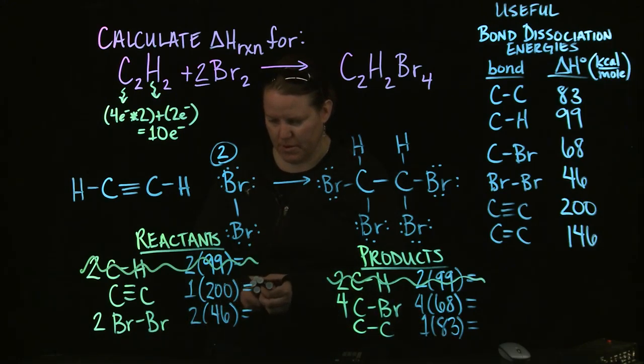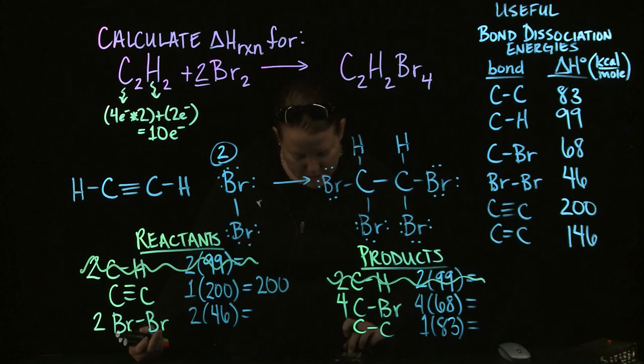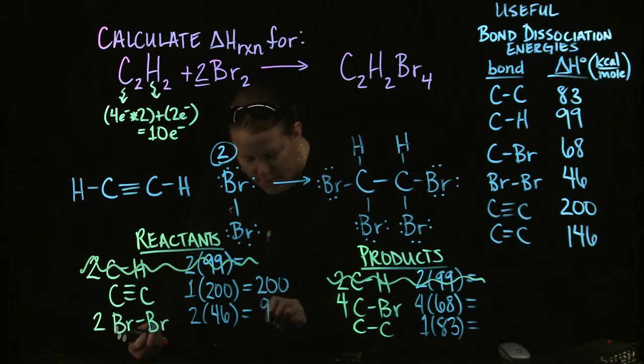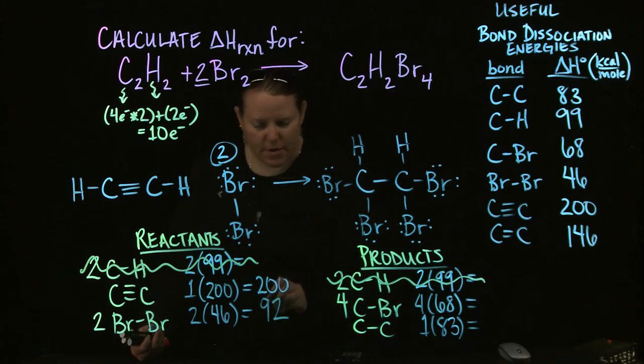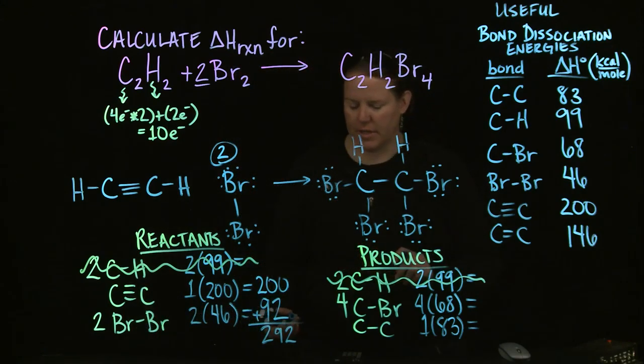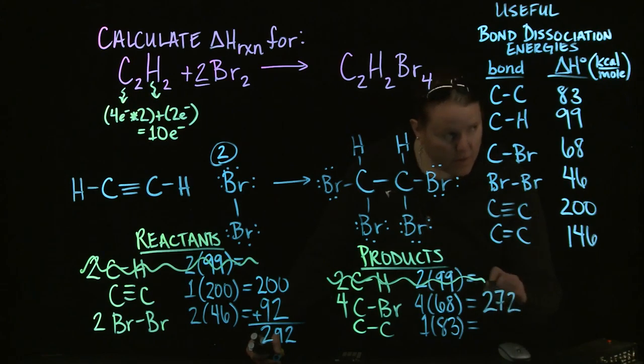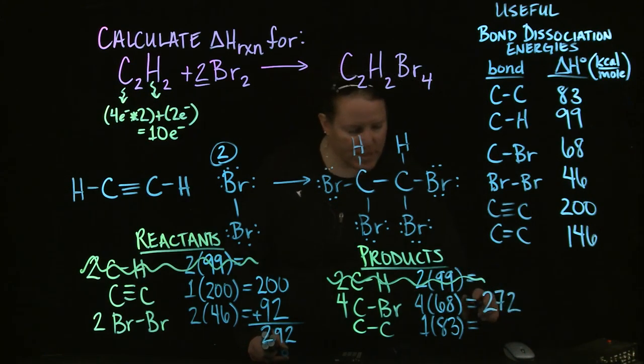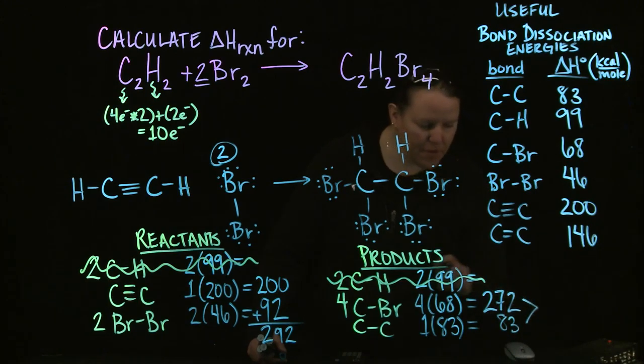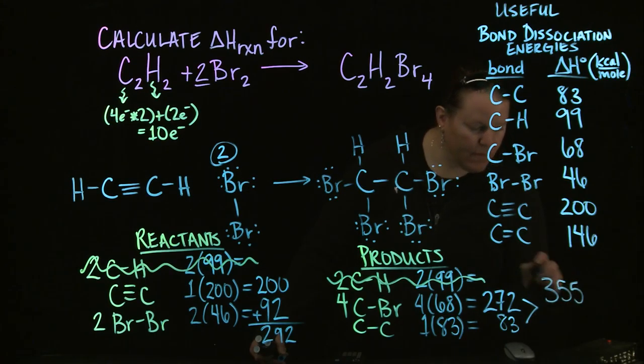Okay. So, now I'm going to do my 200 here. I'm going to actually multiply these out. You know, the two times the 46. And then I'm going to add them together. Right. I do have room underneath. I hardly ever have that. Awesome. Alright. So, there's my 292. And then I have my 4 times 68, which is 272. And I have 1 times 83, which is 83. I'm going to add these together. Plus 83. And that gives me 355.